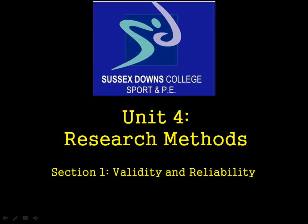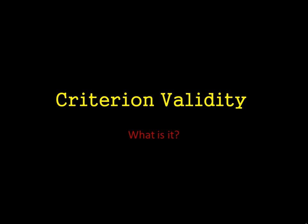Unit 4, Research Methods. Section 1, Validity and Reliability. Today we're going to discuss Criterion Validity, which is a slightly more advanced version of some of the validities we've already discussed. We're going to discuss what Criterion Validity actually is, and also why it is important in research.